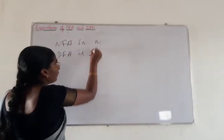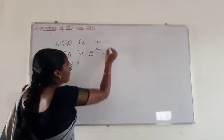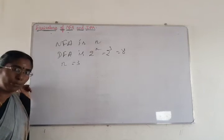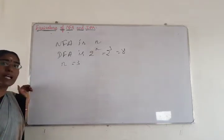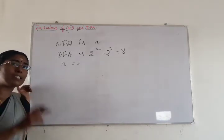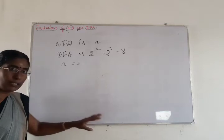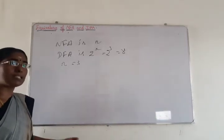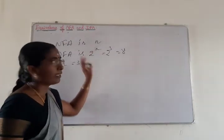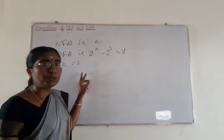The number of states in the DFA is equal to 2 power N. For example, if the number of states in an NFA is equal to 3, then the DFA can have 2 power 3 states, that is equal to 8. The maximum number of states possible for constructing a DFA is 8. Among those 8 states, only the states reachable from the start state are considered for constructing the DFA. The number of states may be up to 2 power N.